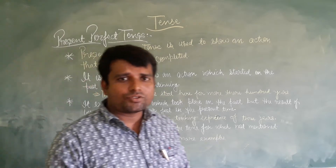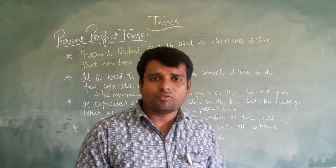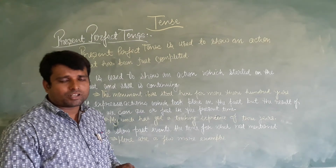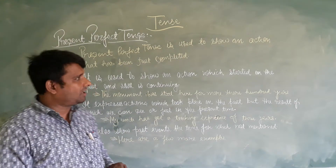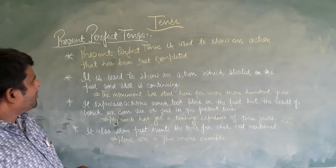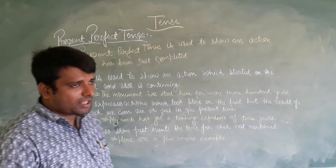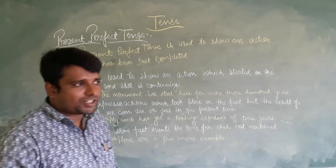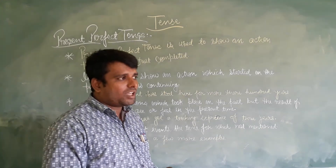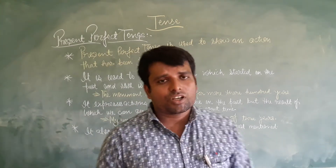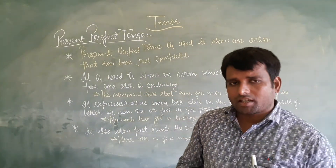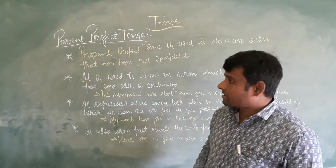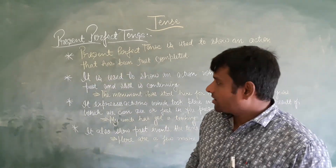Vekar jho abhi abhi pura huwa hai, aise kariyuk ko express karne ke liye present perfect tense ka prayog kiya jata hai. Present perfect tense is used to show an action that has been just completed.